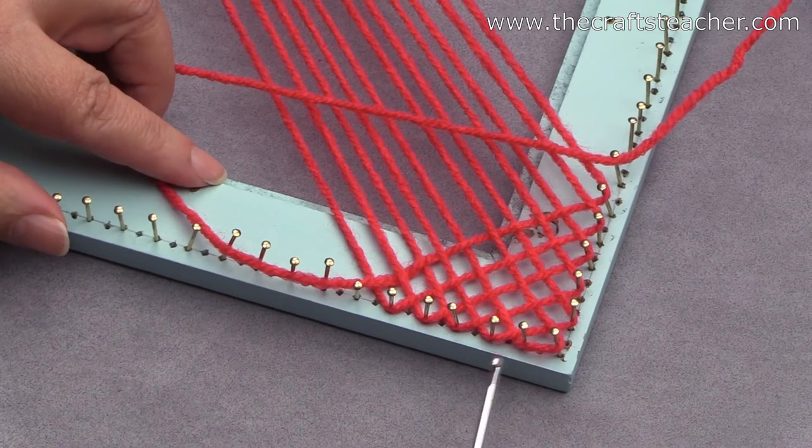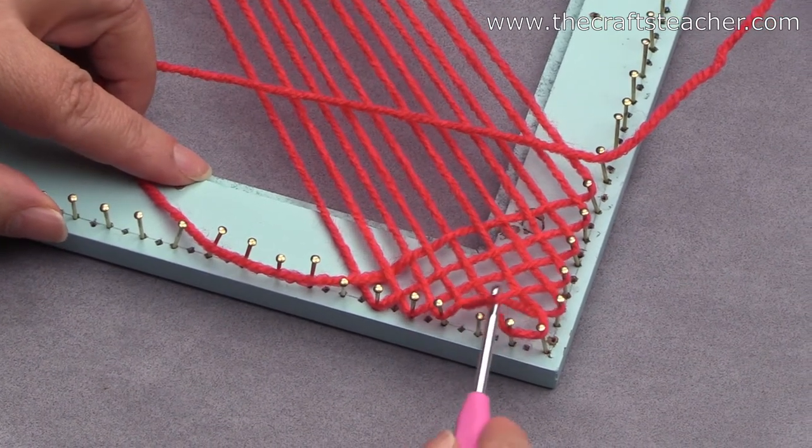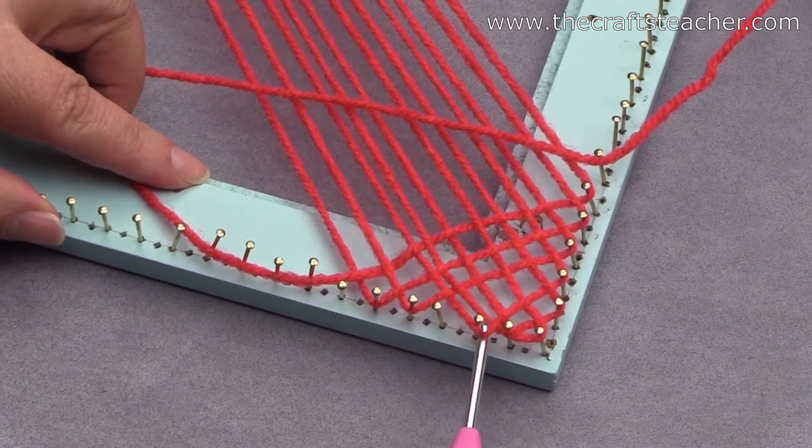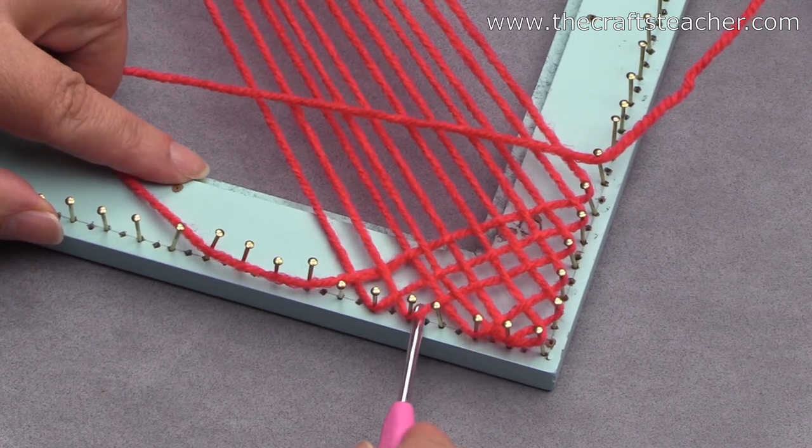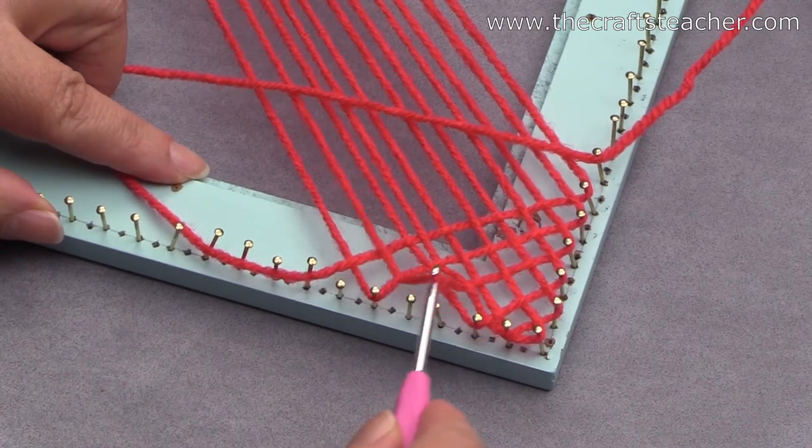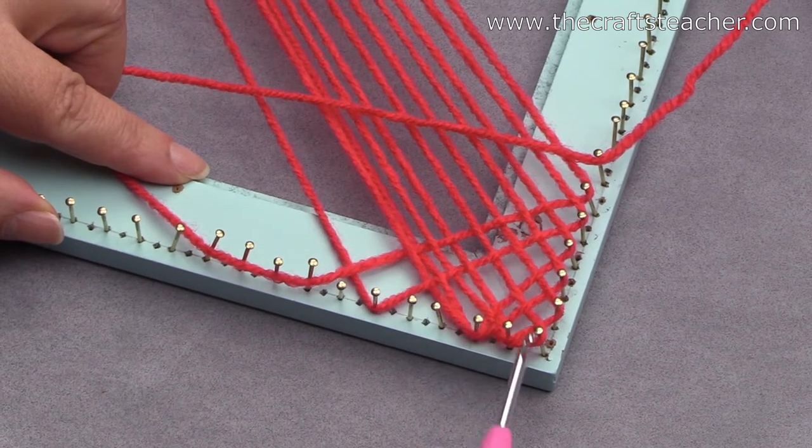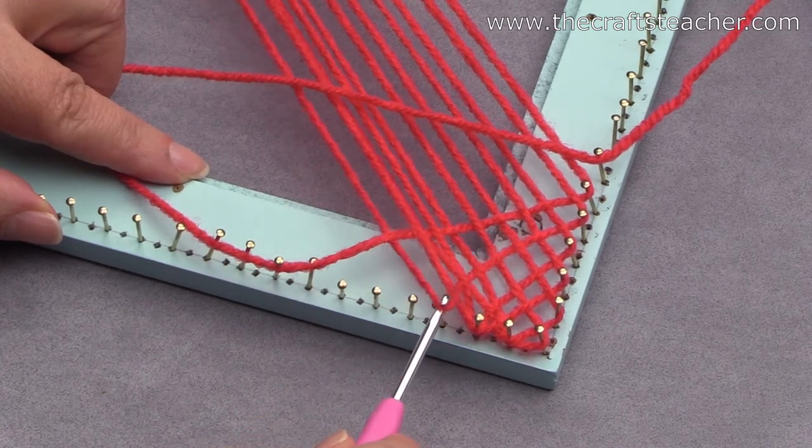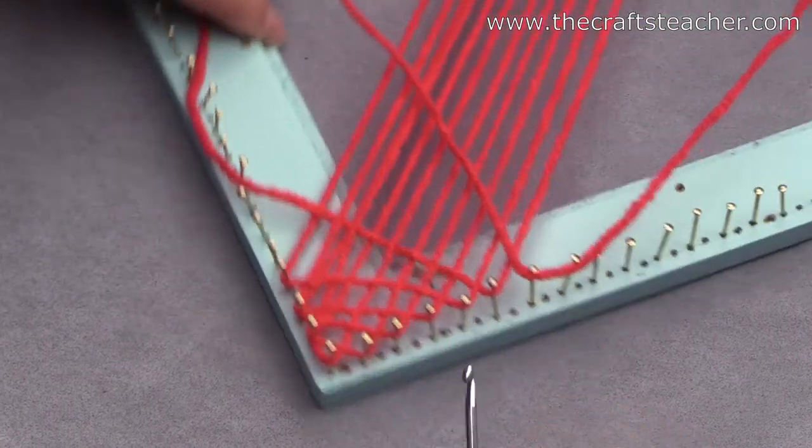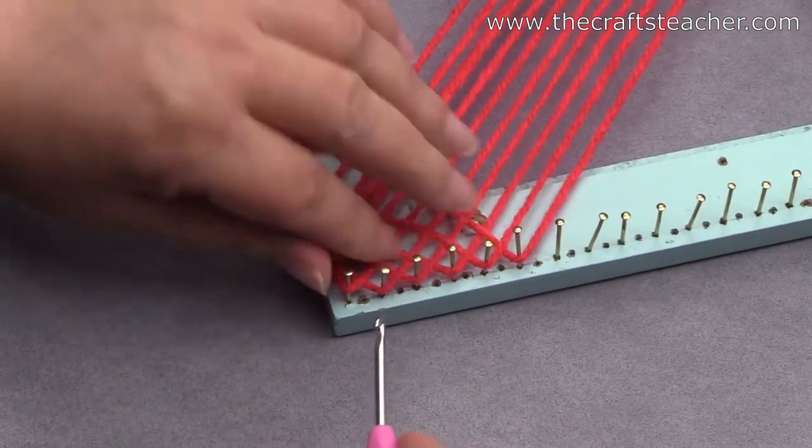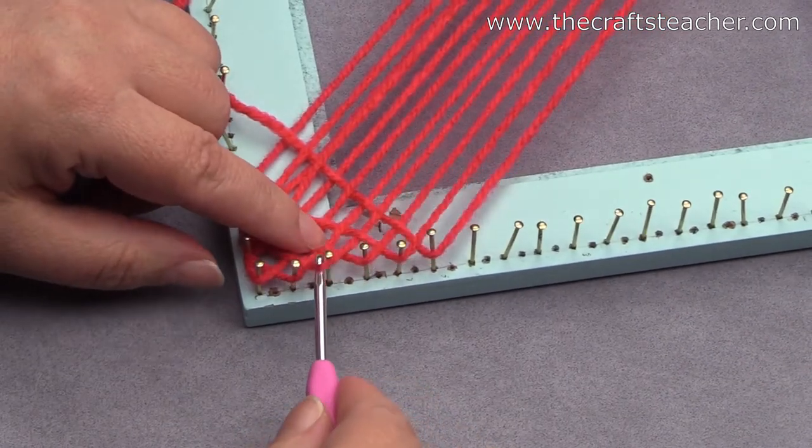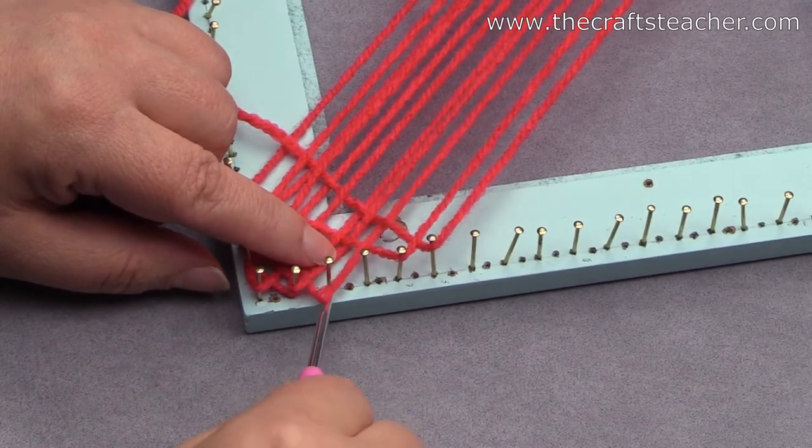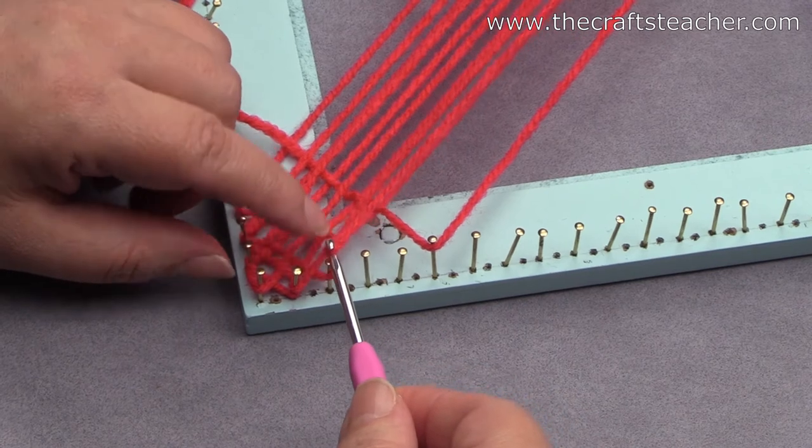So skip the corner nail, take the third nail and put it around the second one. Take this one and put it around the nail that came free. Take the next one, put it around, so now they both have 2 threads around it. Take this one and put it around this one. Now on the last side, repeat that again. Skip the corner nail, put the second around the first, move it over, move it over.